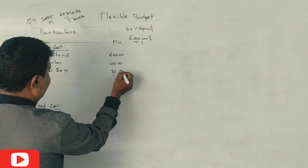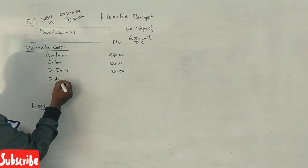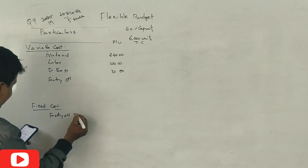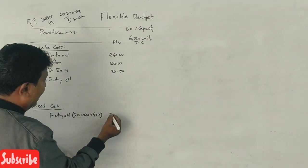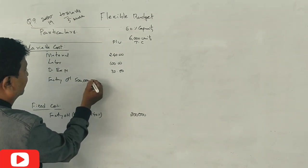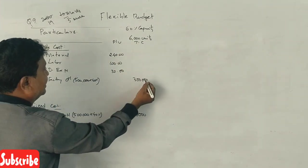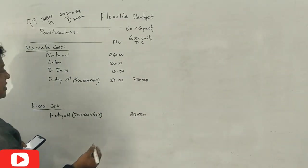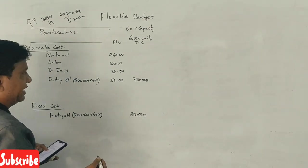Factory overheads, 40 percent fixed in the data. Factory overhead is 5 lakhs, so 40 percent fixed is 2 lakhs and 60 percent is 3 lakhs variable. 3 lakhs divided by 6,000 units gives 50 rupees per unit.